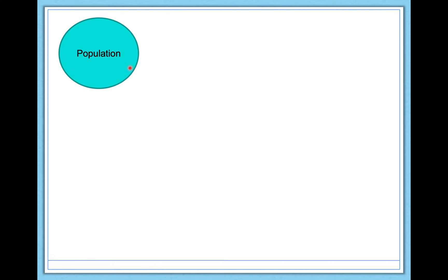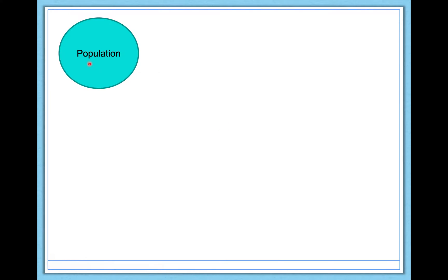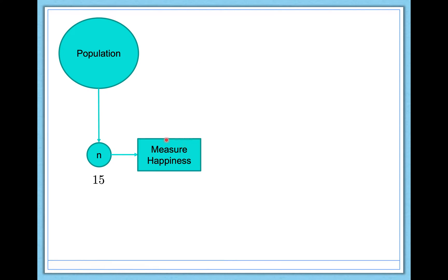First, you have to identify your population. Here, if you look at the research question — does giving people a free cup of coffee change how happy they are — our population is just people. So I'm going to collect a sample of 15 people; our sample size is 15. The structure of the study goes like this: first, you measure happiness. This is your baseline measurement — just before doing anything to participants, how happy are they? With 15 people, we get 15 different happiness scores, one for each participant.